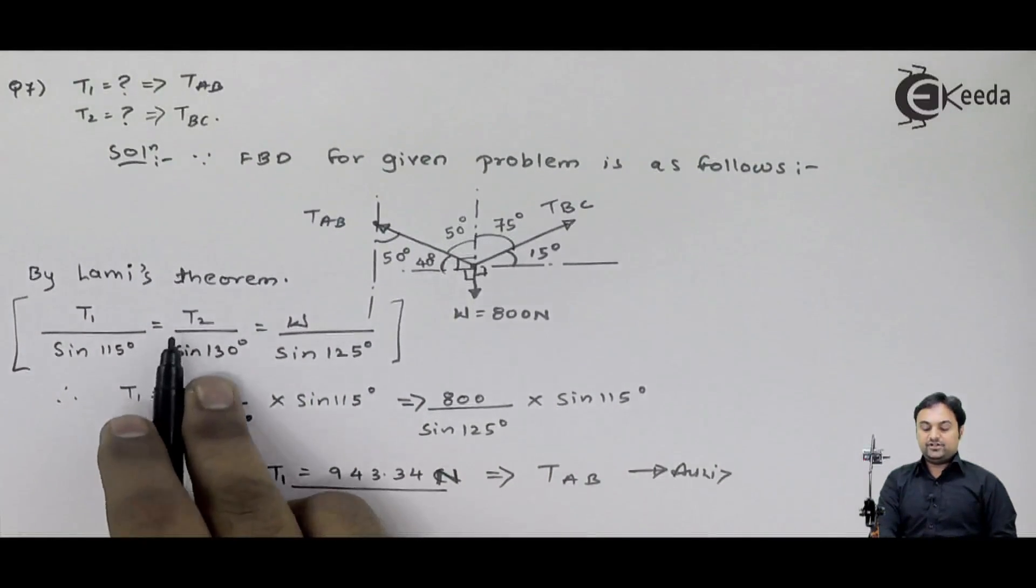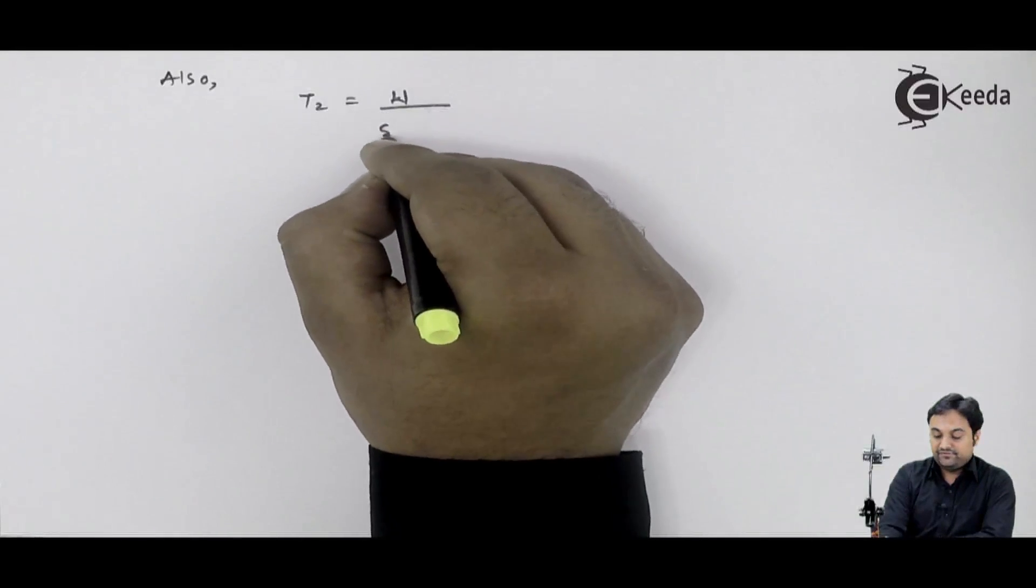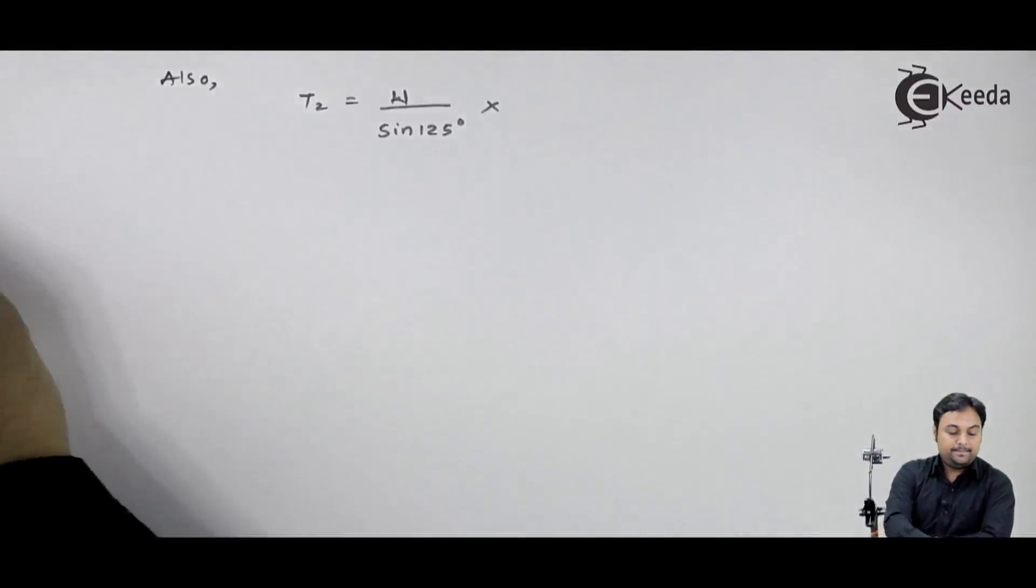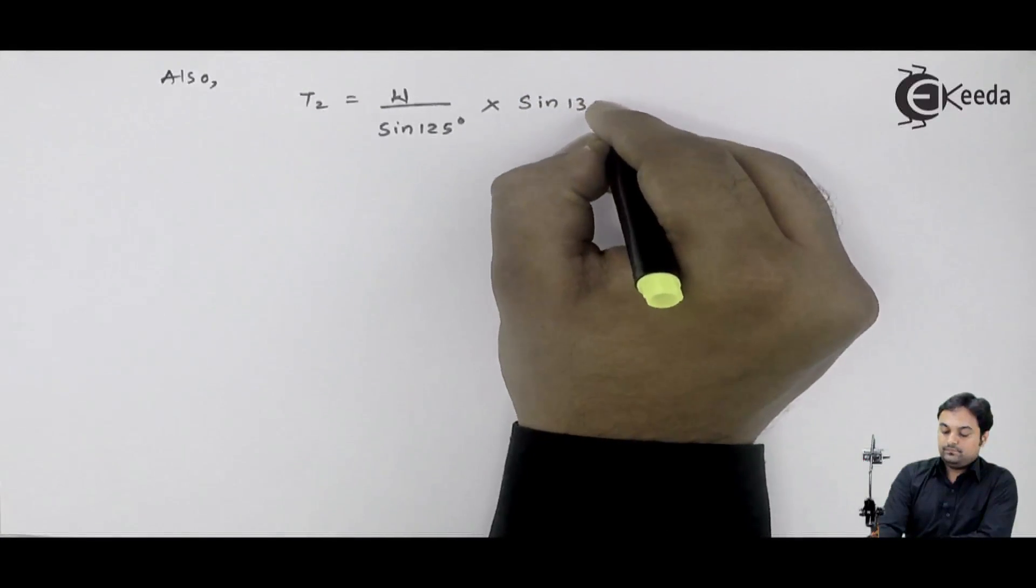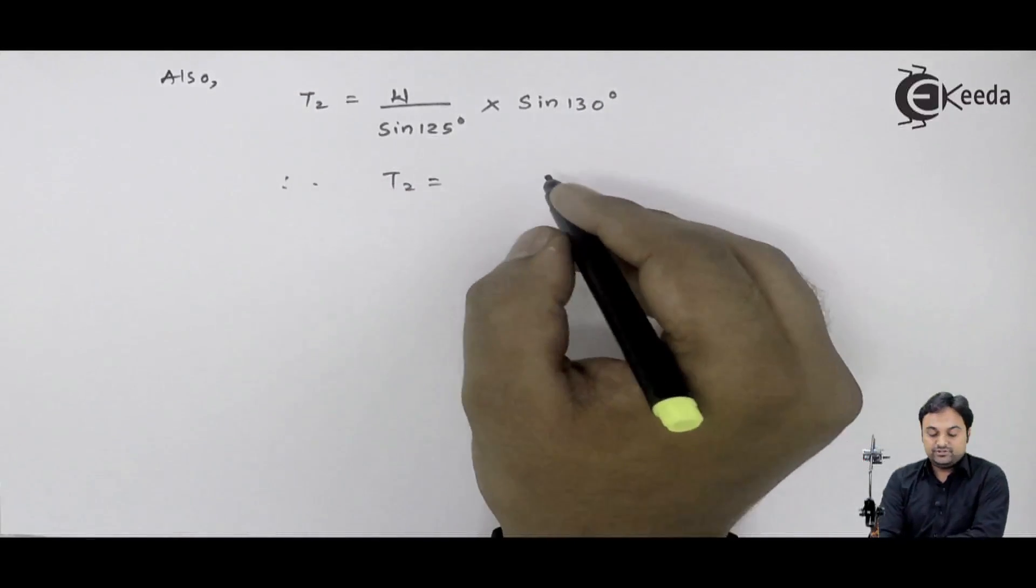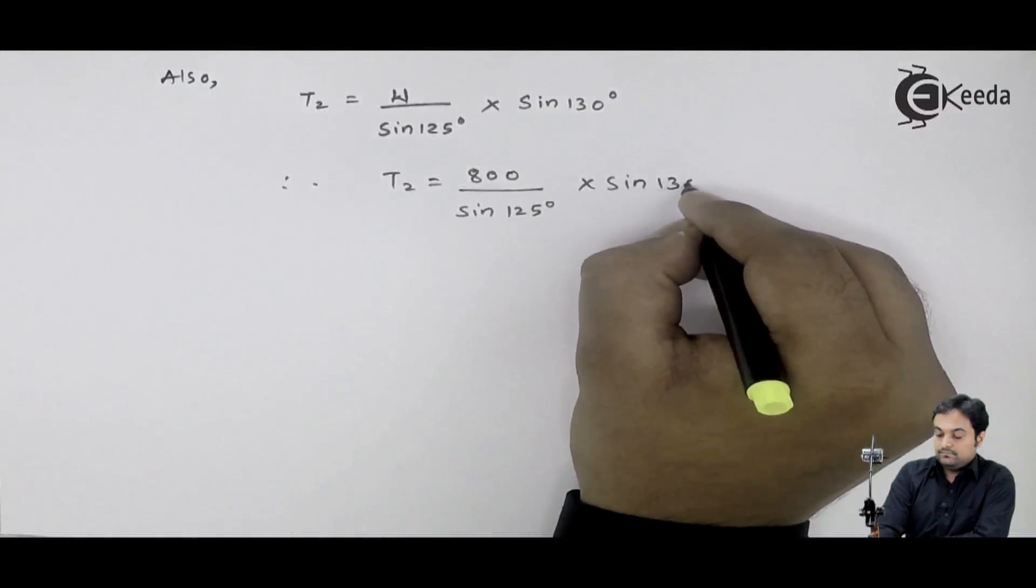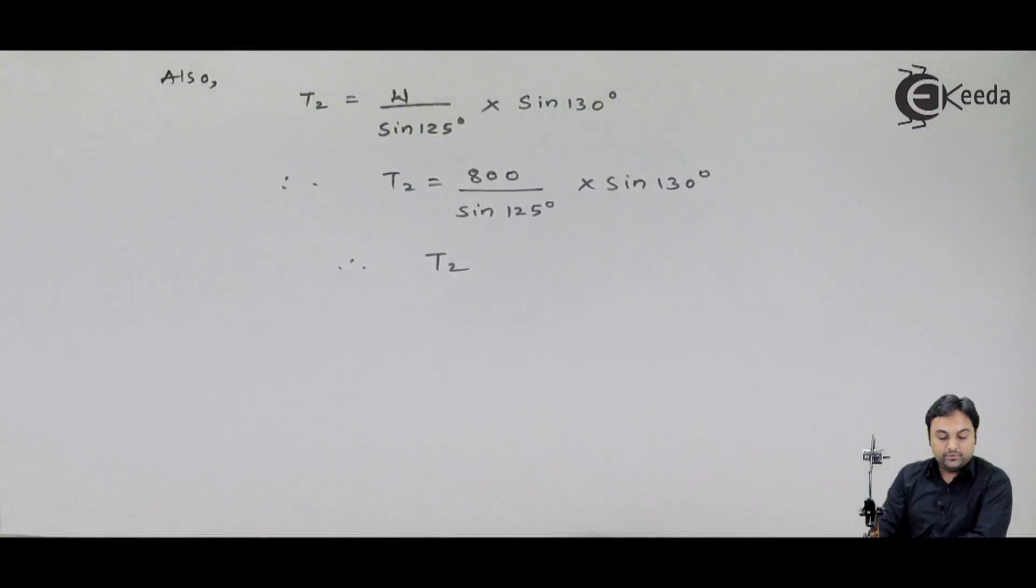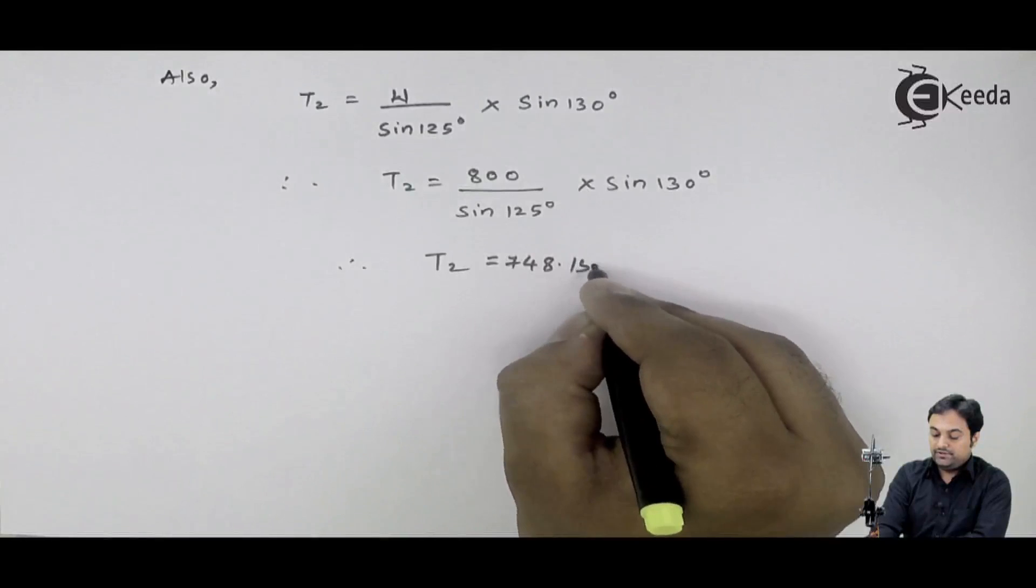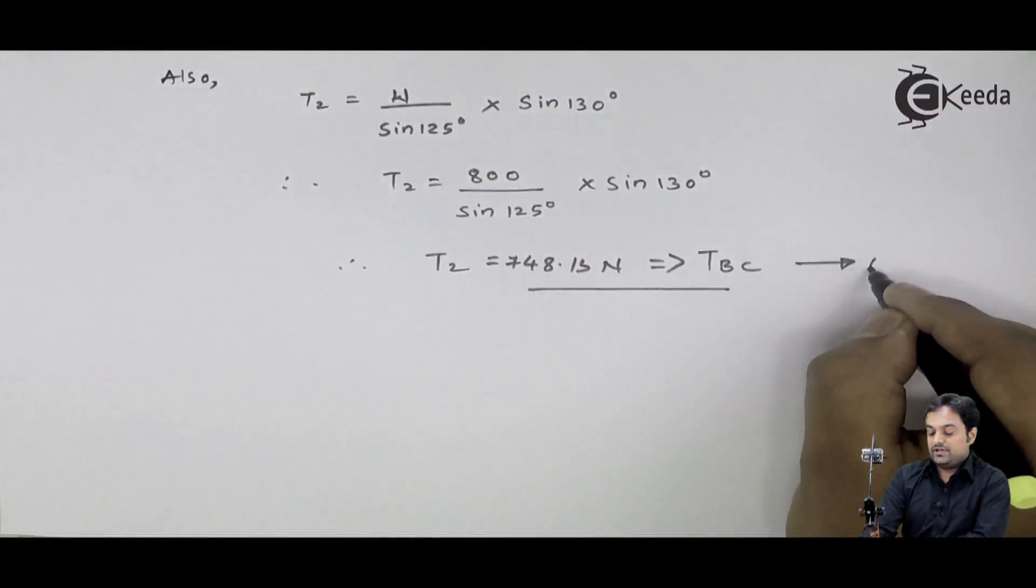Now I need to get the second answer, tension in string BC, which is T2. So I will say that also T2 is equal to W upon sine 125 multiplied by sine 130, I will shift on the other side. Therefore T2 is equal to W is given as 800. Hence if I calculate all terms here, I will get my answer of T2 as 748.13 Newton. This is my answer of T2. T2 means I have calculated TBC, tension in the string BC.